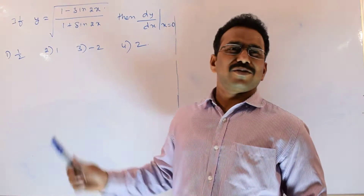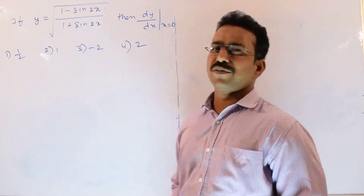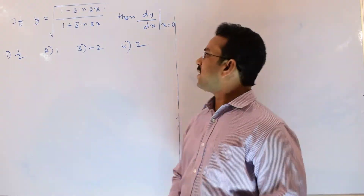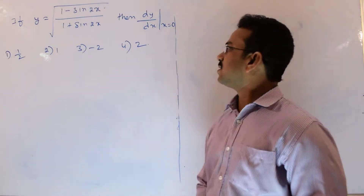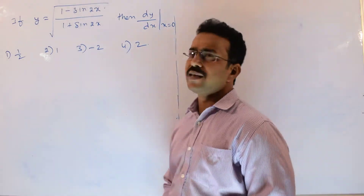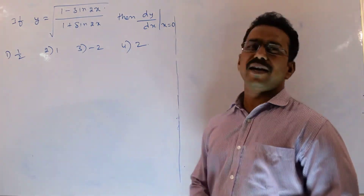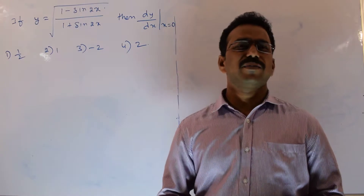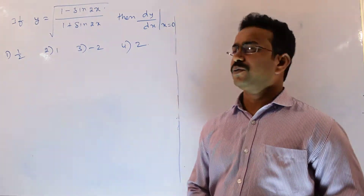Let's discuss the solution of the given question. If y equals the square root of (1 minus sin 2x) divided by (1 plus sin 2x), then find the value of dy/dx at x equals 0.